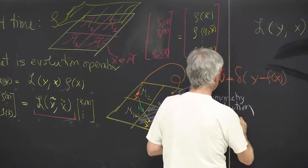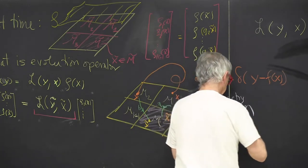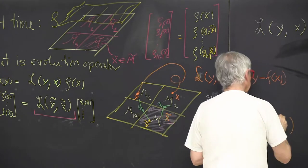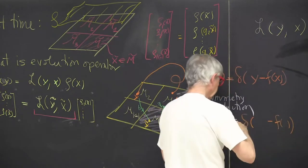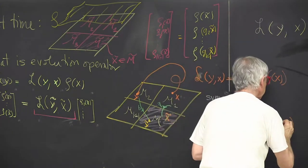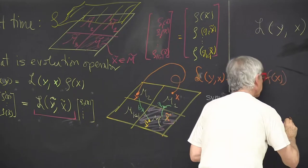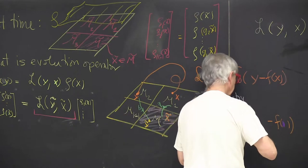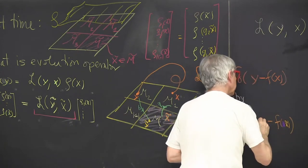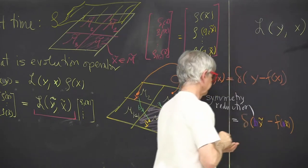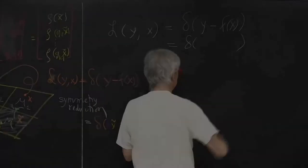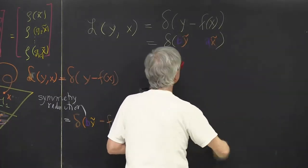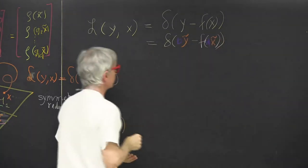So we can write this as: still the evolution law in the full world, but the endpoint is now written as A times x and the final point is B times y—x in the fundamental domain and y in the fundamental domain. And the law is still the original law.